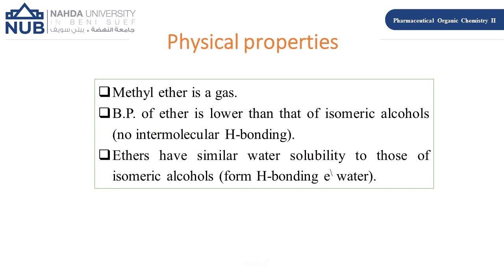Regarding physical properties: methyl ether is a gas. Ethers have lower boiling points than their isomeric alcohols because there is no intermolecular hydrogen bonding between ether molecules, while alcohols have hydrogen bonding. Ethers have similar solubility in water as their isomeric alcohols of the same molecular weight, because ethers can form hydrogen bonds with water.